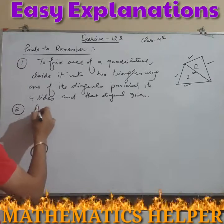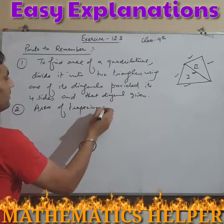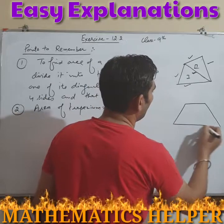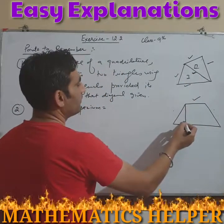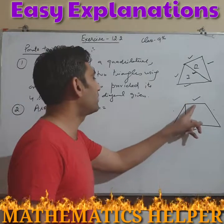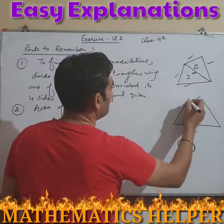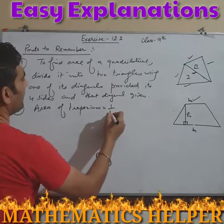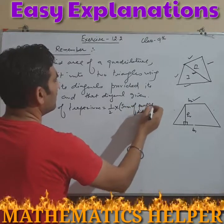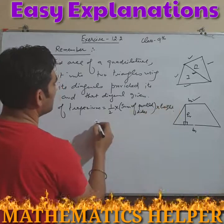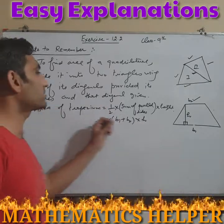Second point: for the area of a trapezium — a quadrilateral with one pair of opposite parallel sides — the formula is: Area = half into (sum of parallel sides) into height, written as: Area = ½ × (base₁ + base₂) × height. We have some work related to this formula, so we are discussing it here.